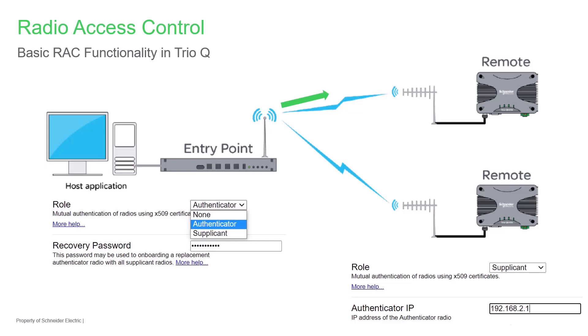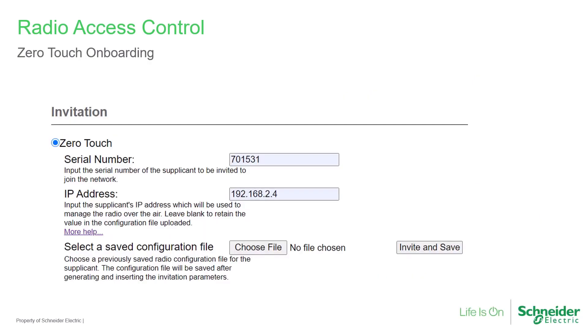Once authorized, certificates are valid indefinitely until revoked by the administrator. Several onboarding methods exist and we will review each of them. One-time passwords, or OTP, are used to securely onboard supplicants with the authenticator using a special file called an invitation.